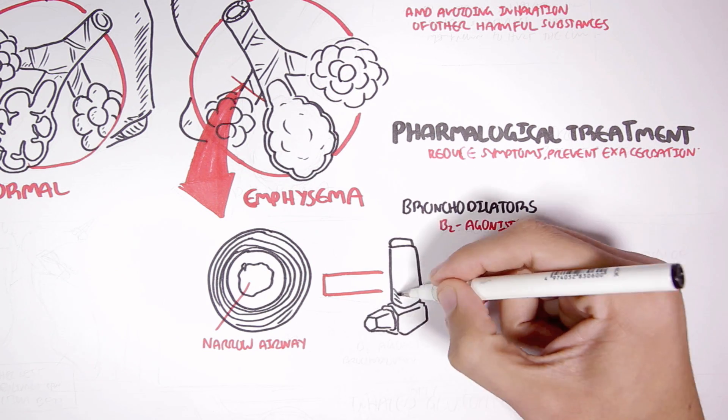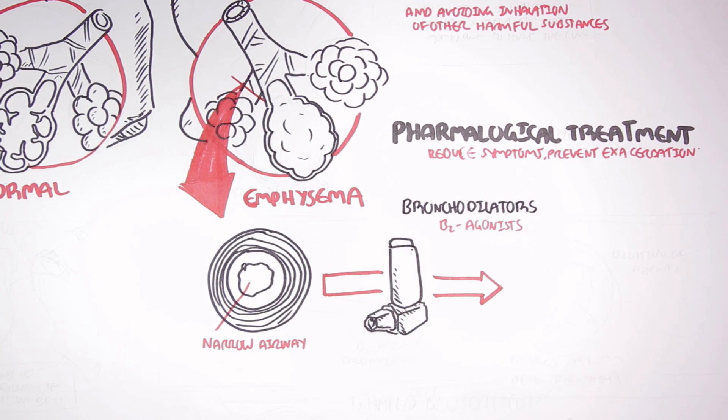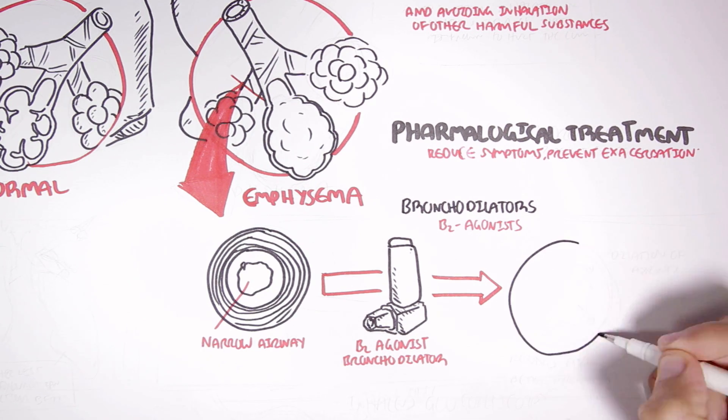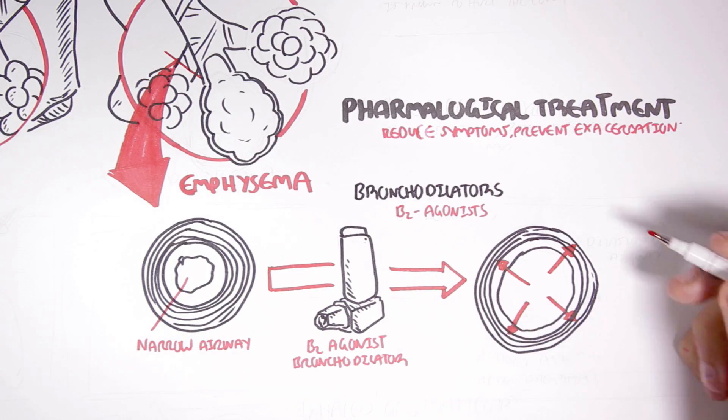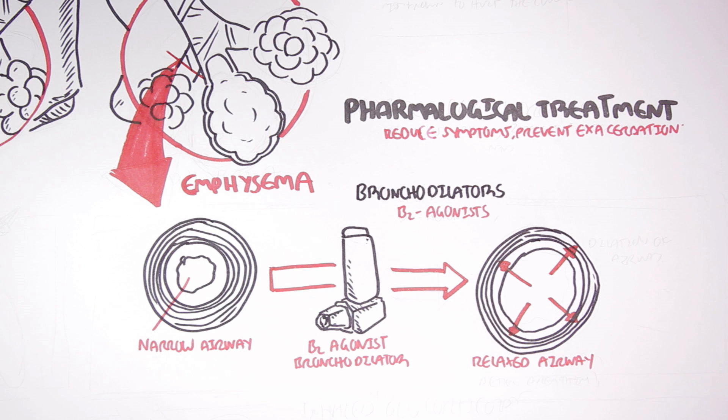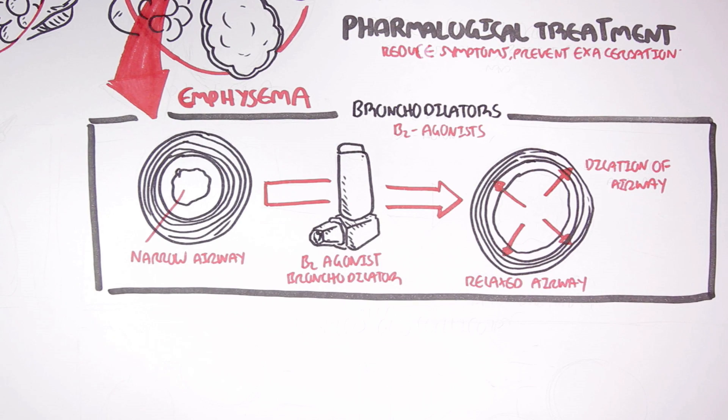If we administer a beta-2 agonist inhaler, which is a bronchodilator, this will relax the airways and the bronchosmooth muscles, allowing the person to breathe easier. Bronchodilators reduce symptoms and improve lung function.